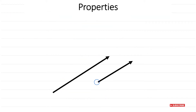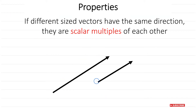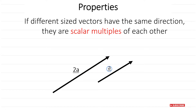Looking at properties of vectors: if different-sized vectors have the same direction, we say they are scalar multiples of each other, and we also say they are parallel vectors. For example, if one vector is 2a and another is a, these are scalar multiples of each other and therefore parallel vectors. There's a lot more to come on that in a later video.